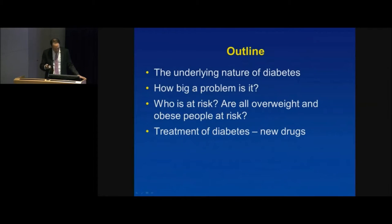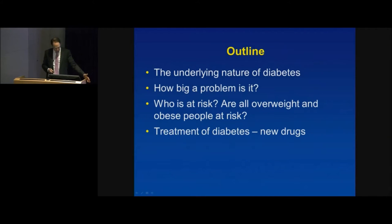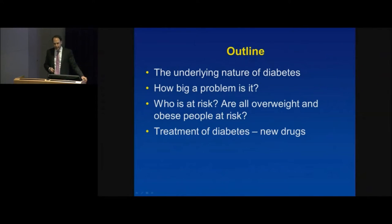What I'm going to talk to you about today is the underlying nature of diabetes, what are the different types, how big a problem is it, who's actually at risk, are all overweight and obese people at risk of developing type 2 diabetes, and a little bit about some new diabetes drugs. Throughout the talk I'll try and highlight some of the research done at the Garvan and some projected research for the next few years.